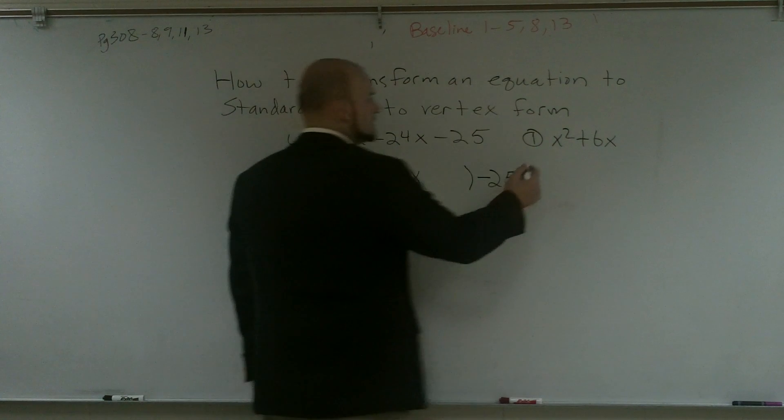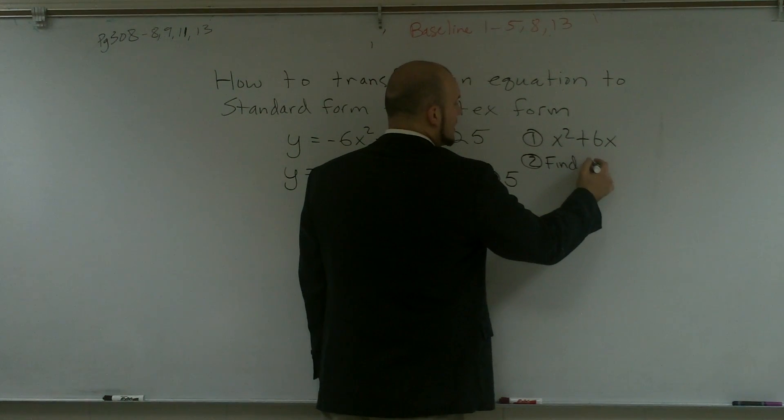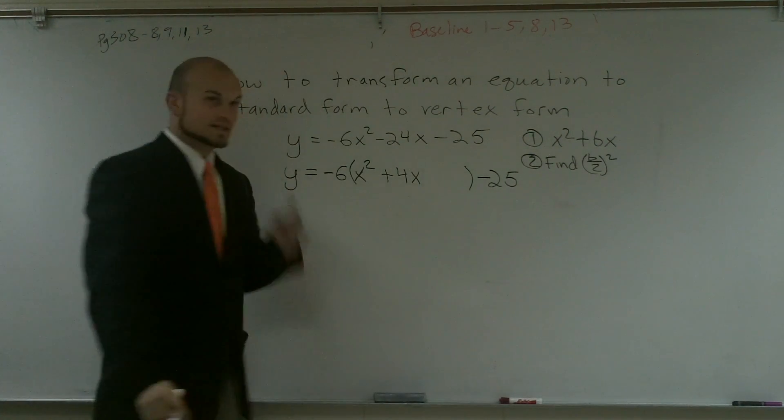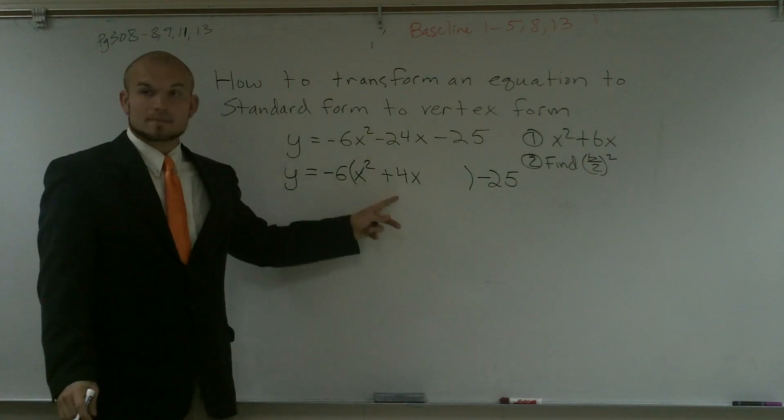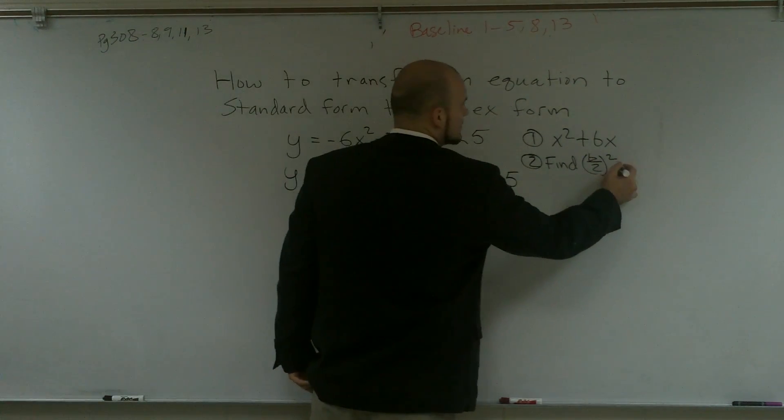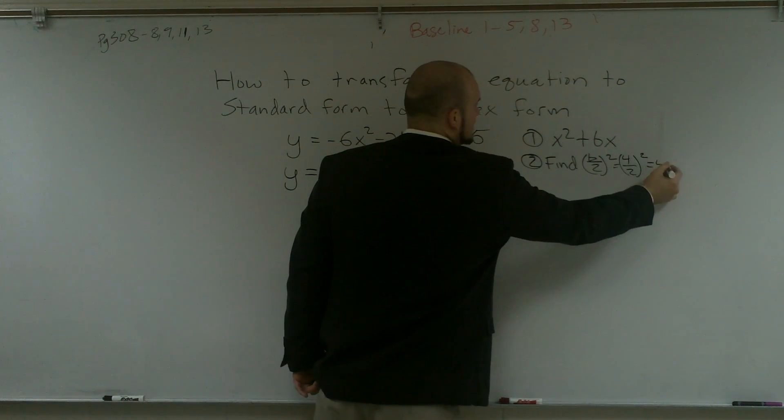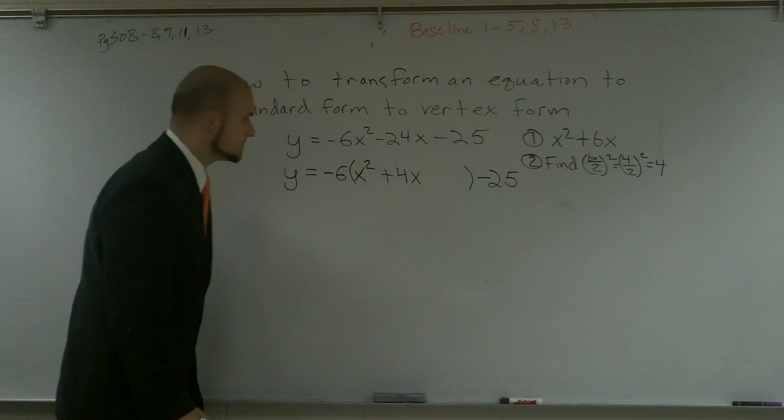Now the second step is to determine or to find b over 2 squared. So I need to take my b, divide it by 2, and square it. So that's going to be 4 over 2 squared, which is going to equal 4 in this case.